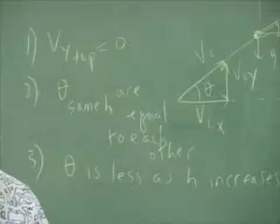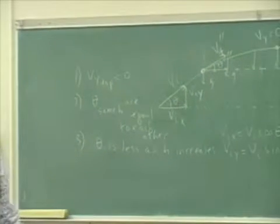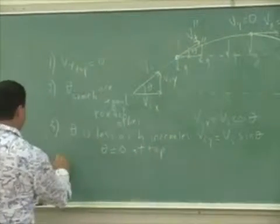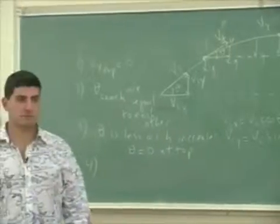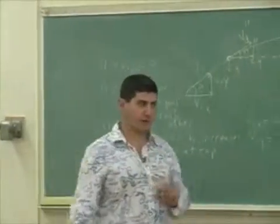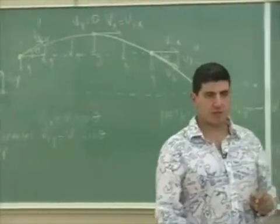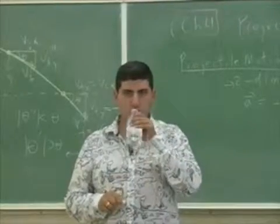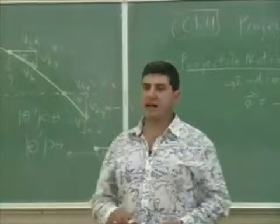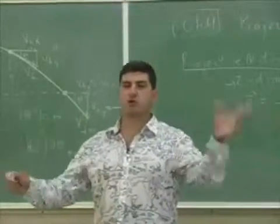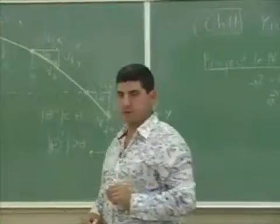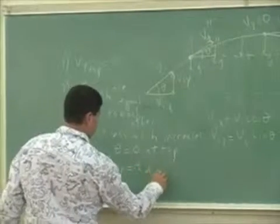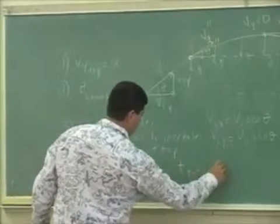The theta at the top is zero. Another generalization: the time to go up is equal to the time to go down, and therefore the total time is equal to twice the time to reach its highest height. So t_up equals t_down, and t_total equals 2·t_up.